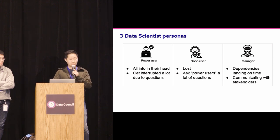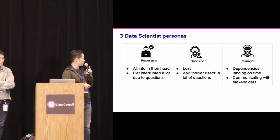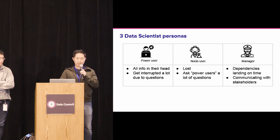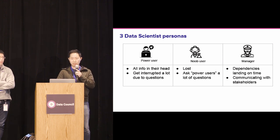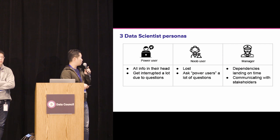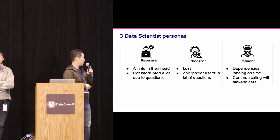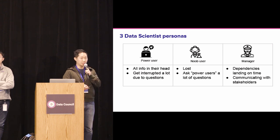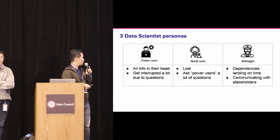The third persona is the manager, who oversees product data pipelines. They're more concerned with dependencies, landing on time, and communicating with stakeholders who own the data and will be affected when certain SLAs are missed.